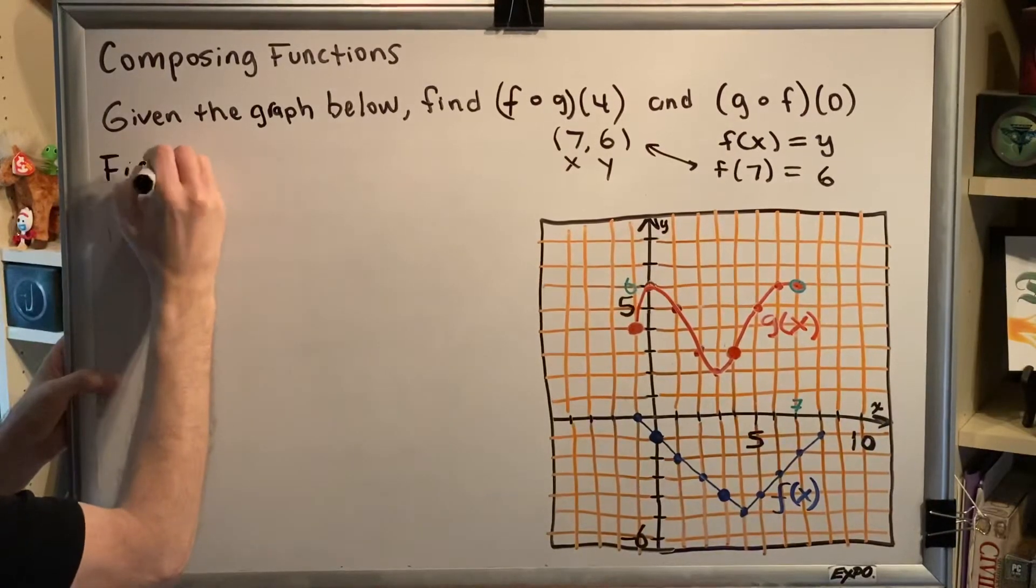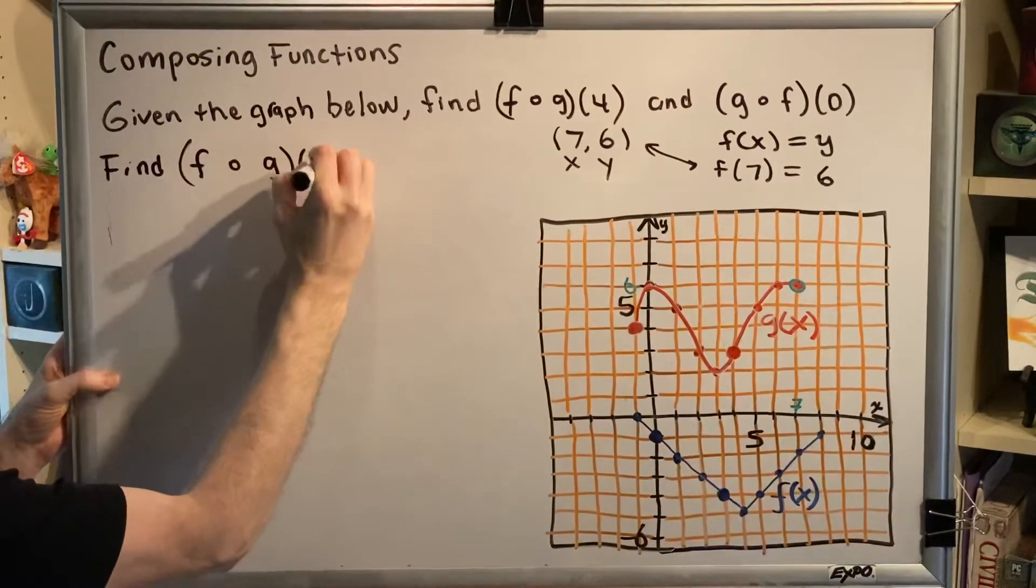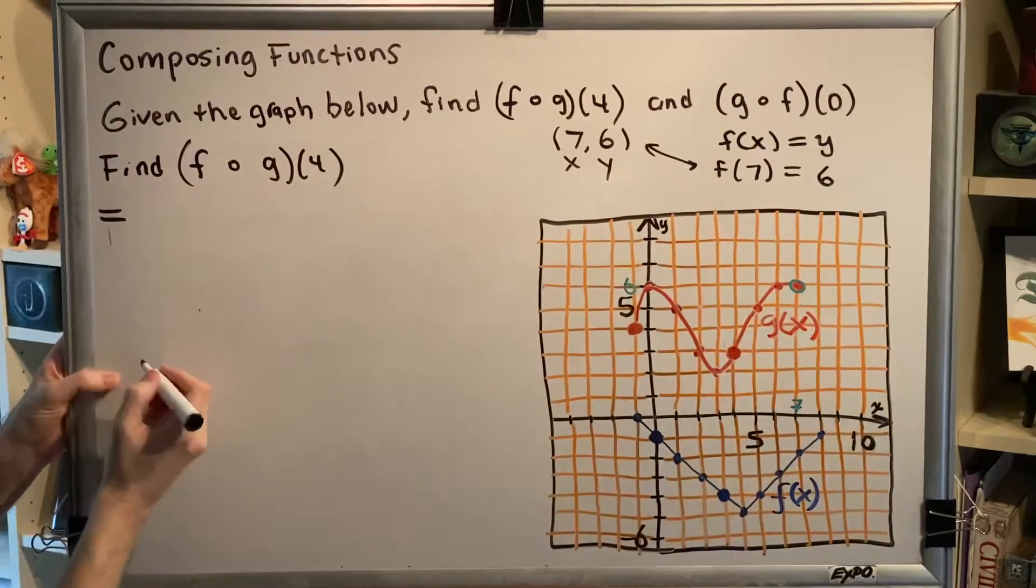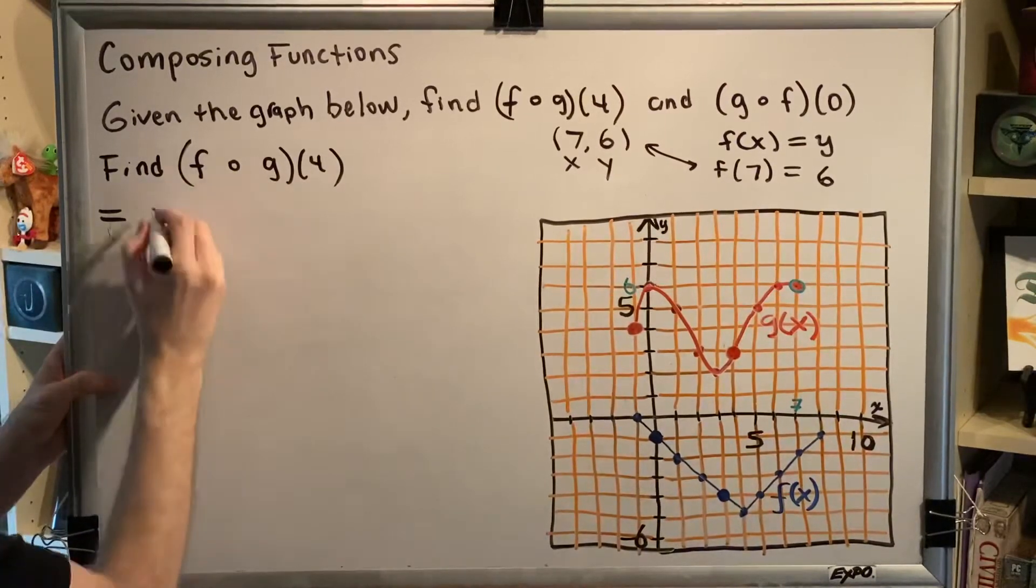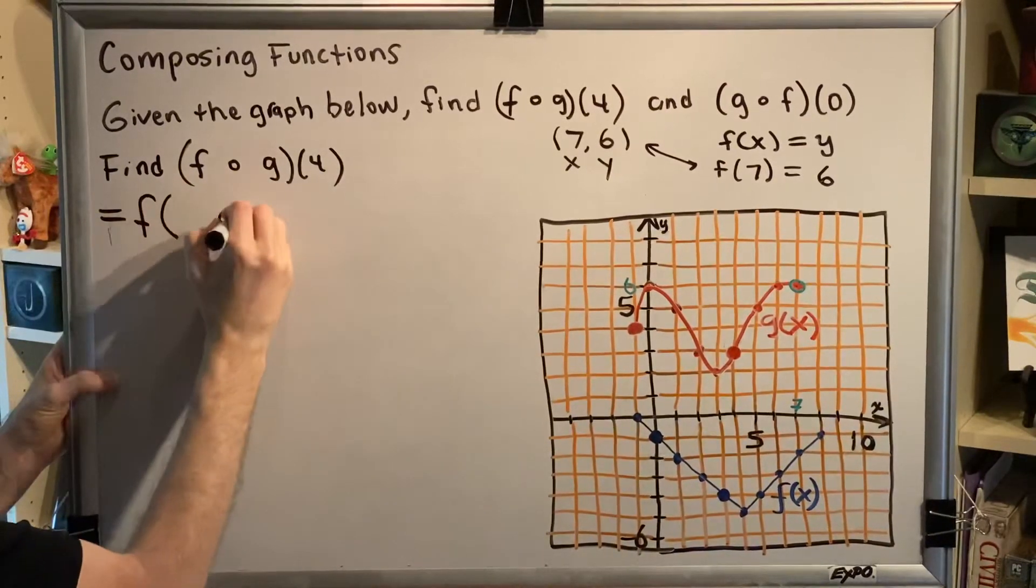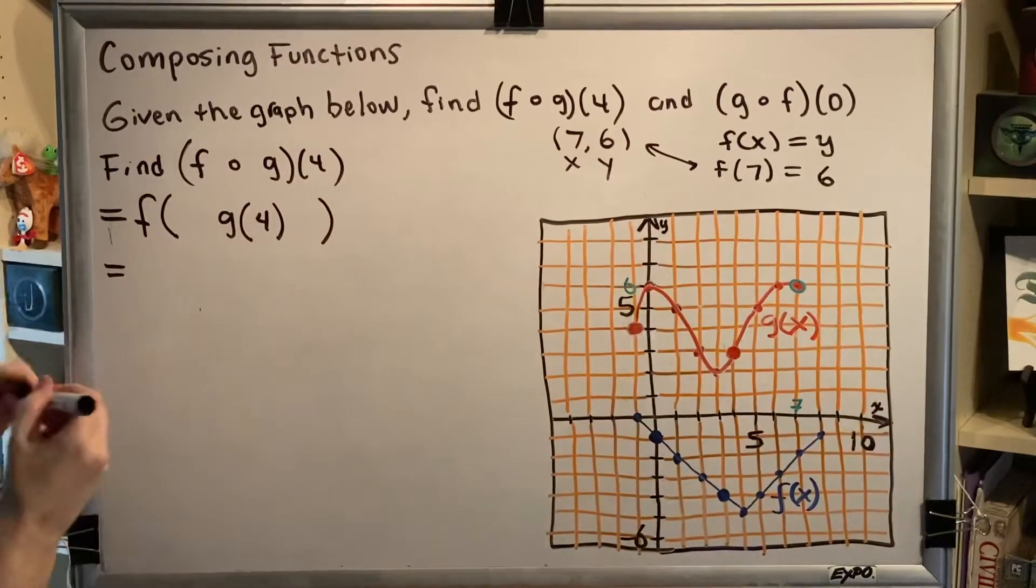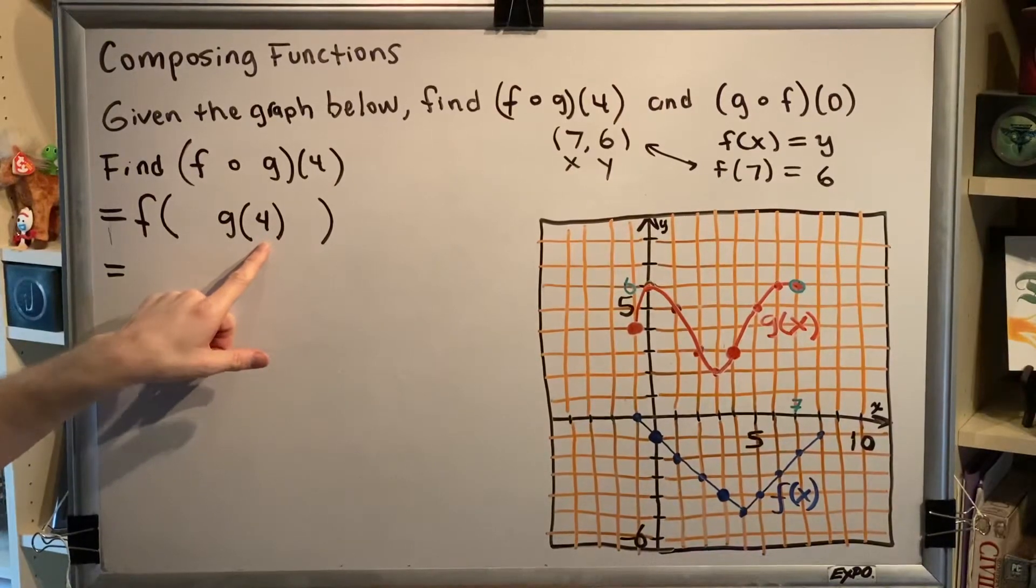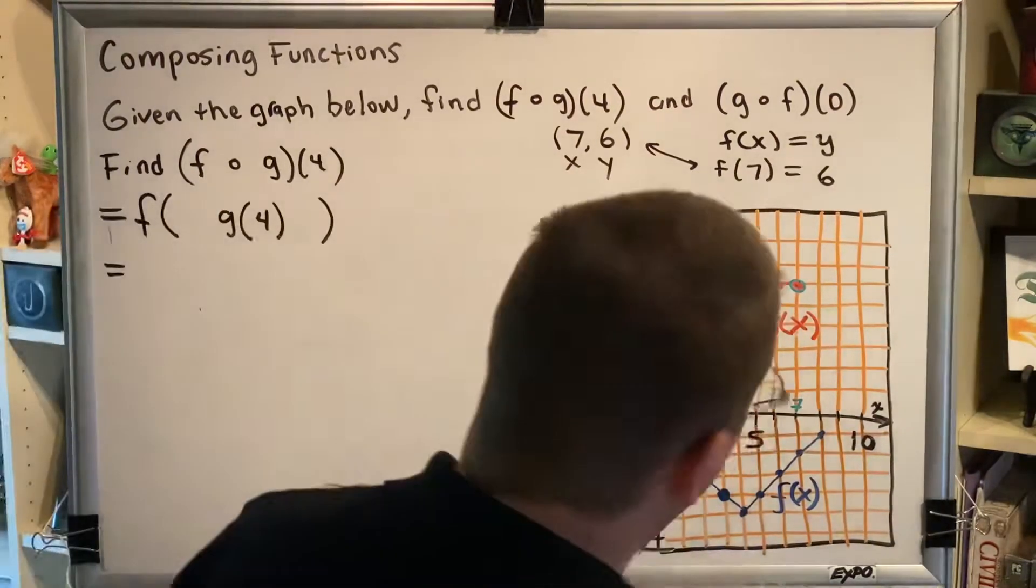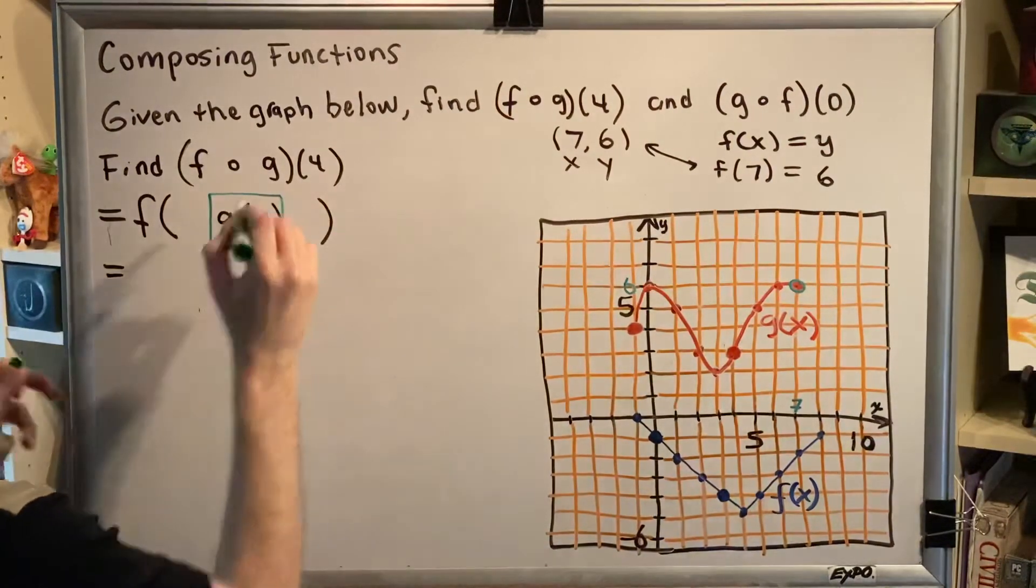First, we're asked to find f composed with g of 4. The first step is to rewrite using the definition and we write the order of the letters as they appear. F of g of 4. We look in the innermost parentheses and we see here a number. So we're going to work from the inside out, which means the first thing we need to do is figure out g of 4.